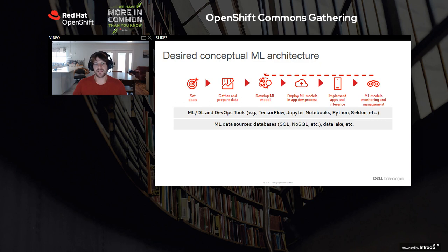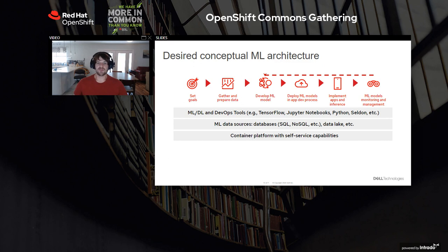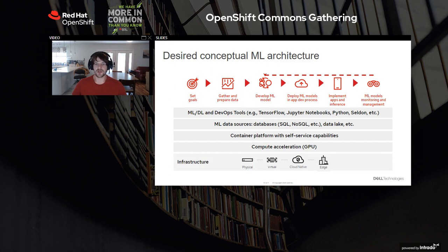We need to plumb in those data sources. Ideally, we would want a platform that is self-service so that developers can request new containers or pods on demand and move things between development environments and production with minimal need to interact with operations teams. Since AI workloads benefit from GPU acceleration, we want to ensure our platform has GPU support and that data science teams can get access to them. The underlying infrastructure in our case is the Dell EMC Ready Stack for OpenShift with GPUs inside the servers.